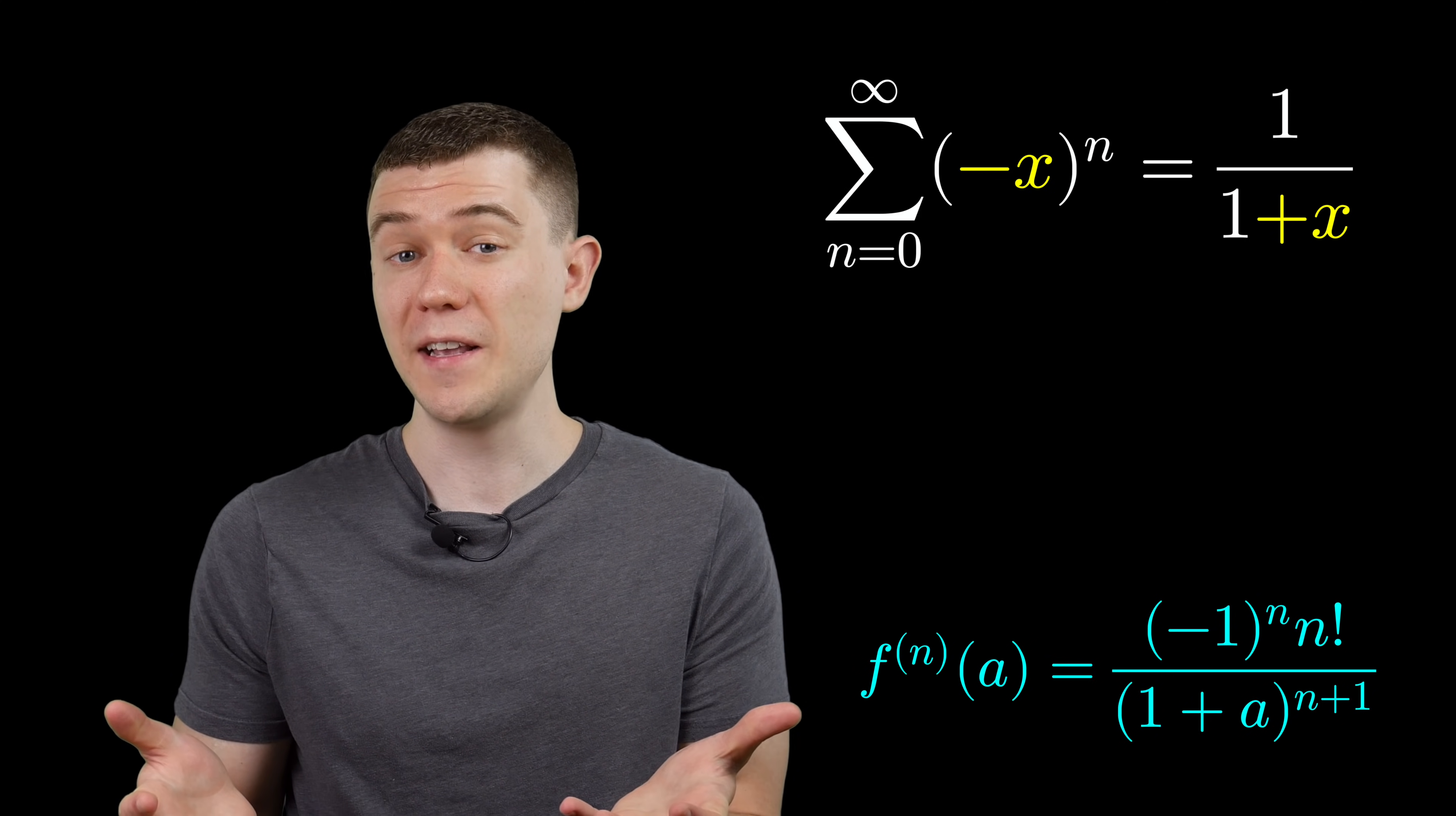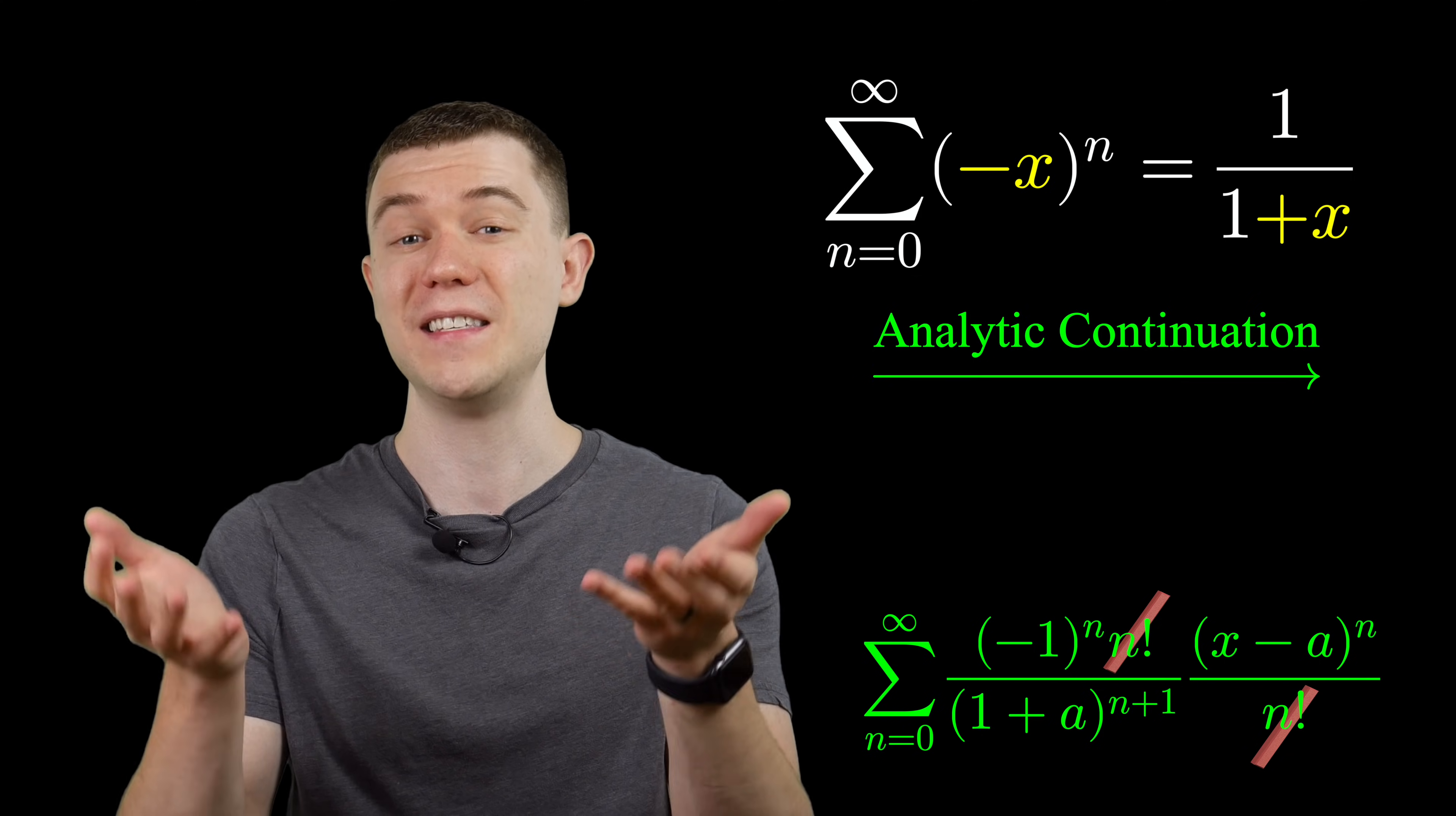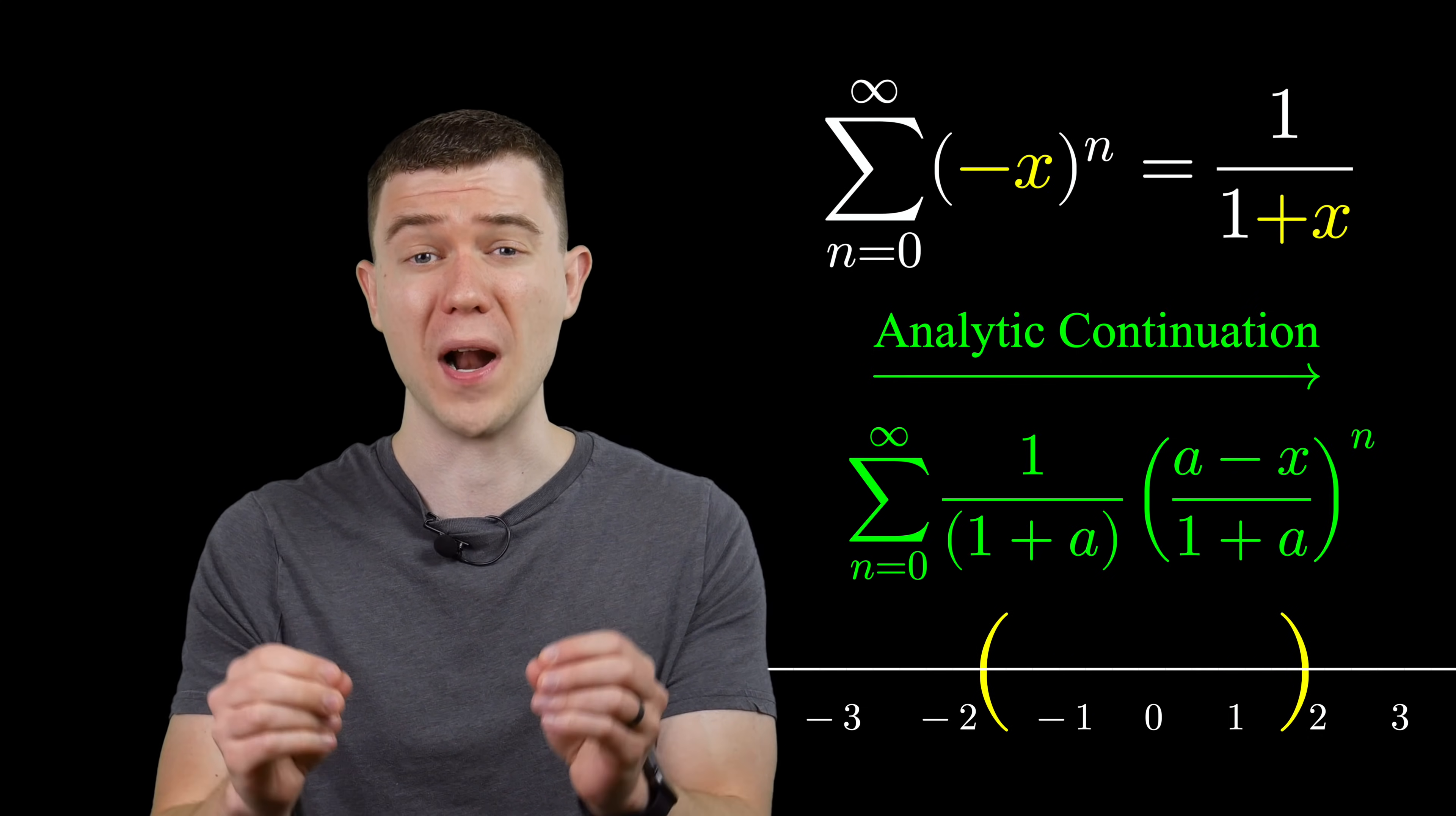Let's just slip this into our Taylor series formula. The sum from n equals zero to infinity of that derivative we just found times x minus a to the n over n factorial. This is pretty nice because once we substitute this in, a bunch of stuff cancels and we get this nice simplified Taylor series. What you might notice is that if we let a equals zero, you just get the good old geometric series. So the geometric series is sort of just centered at zero. But centering at zero didn't work because of its interval of convergence.